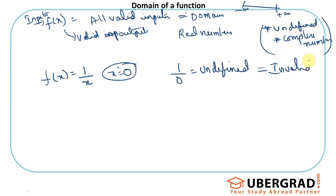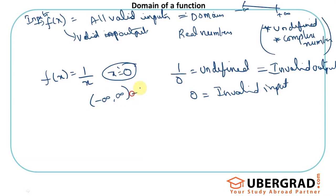Since 0 gives an invalid output, 0 is an invalid input. So the domain is minus infinity to positive infinity except 0 — that's why we write it with minus, then curly brackets around 0. There are three types of brackets we use, which I'll revise: if I write 2 to 10 in square brackets, that means x can be anything from 2 to 10.